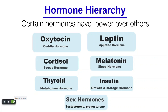Here we have a hormone hierarchy and what it's basically showing is that certain hormones have power over others. You'll see right at the top we've got oxytocin and leptin — that would be a cuddle hormone and an appetite hormone — because these particular hormones feed into lots of different pathways in the body. And right at the bottom we've got sex hormones, so that would be testosterone, progesterone, and oestrogen.